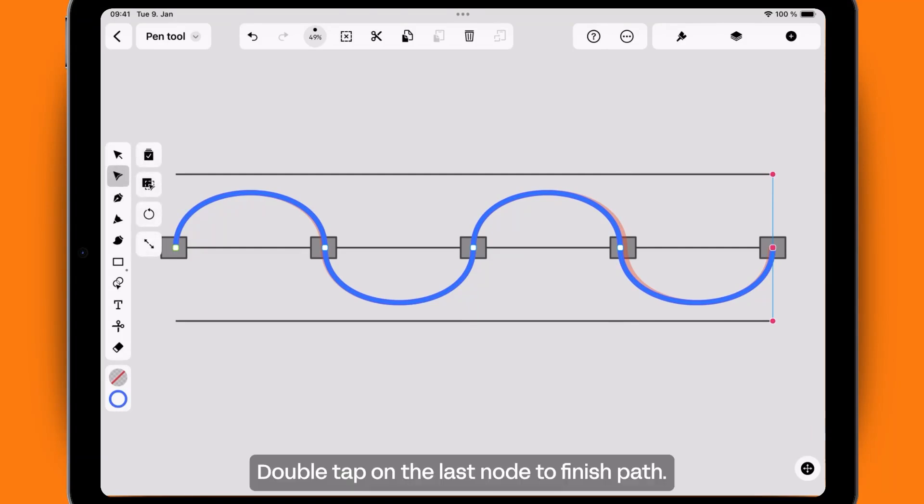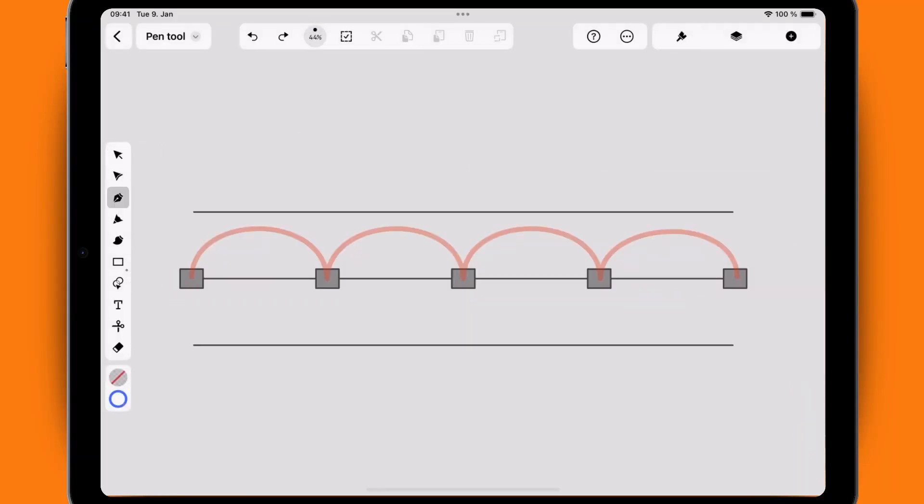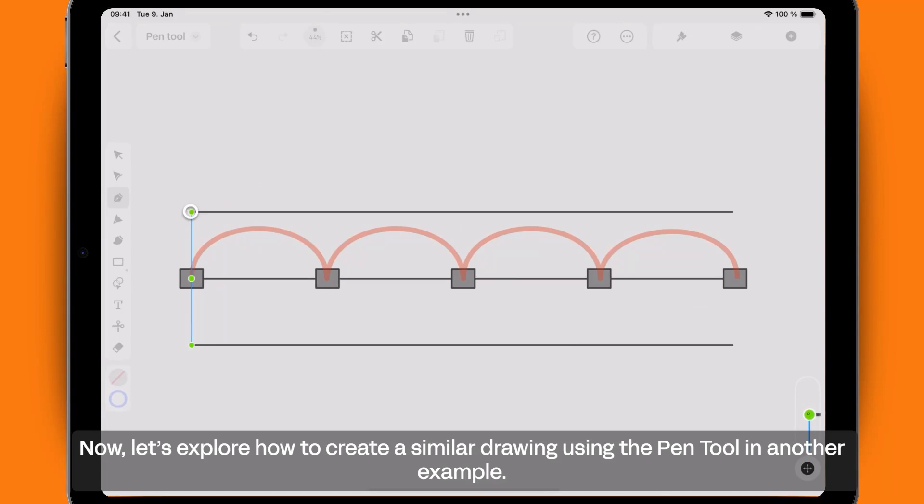Double tap on the last node to finish path. Now, let's explore how to create a similar drawing using the pen tool in another example.